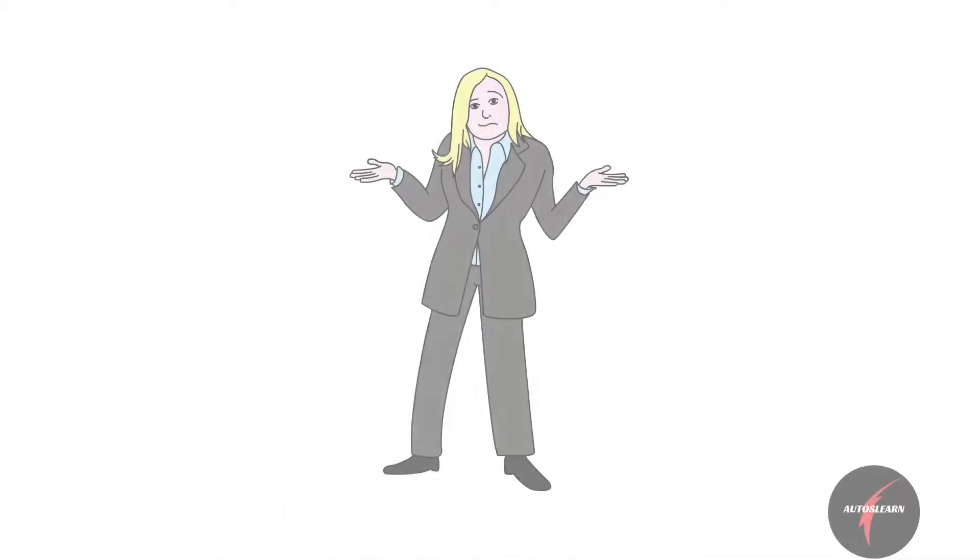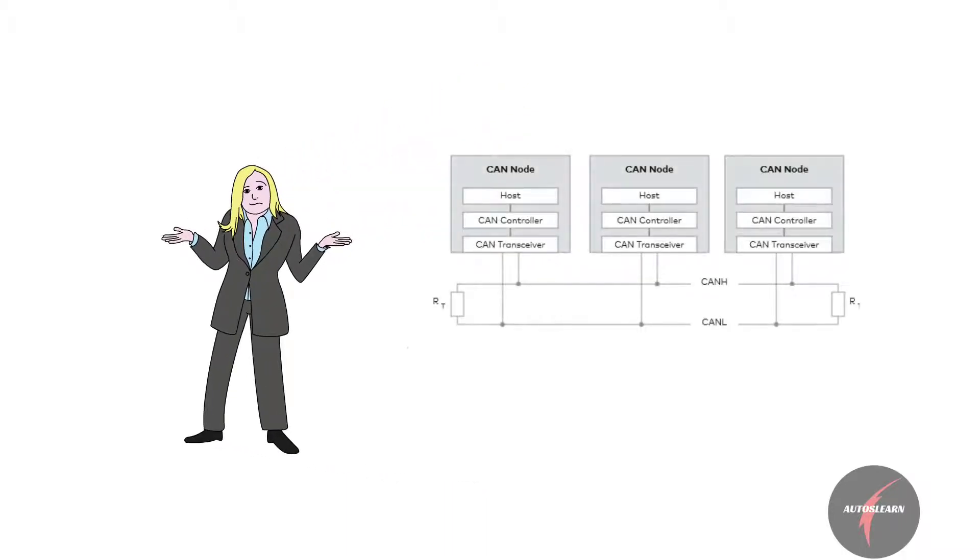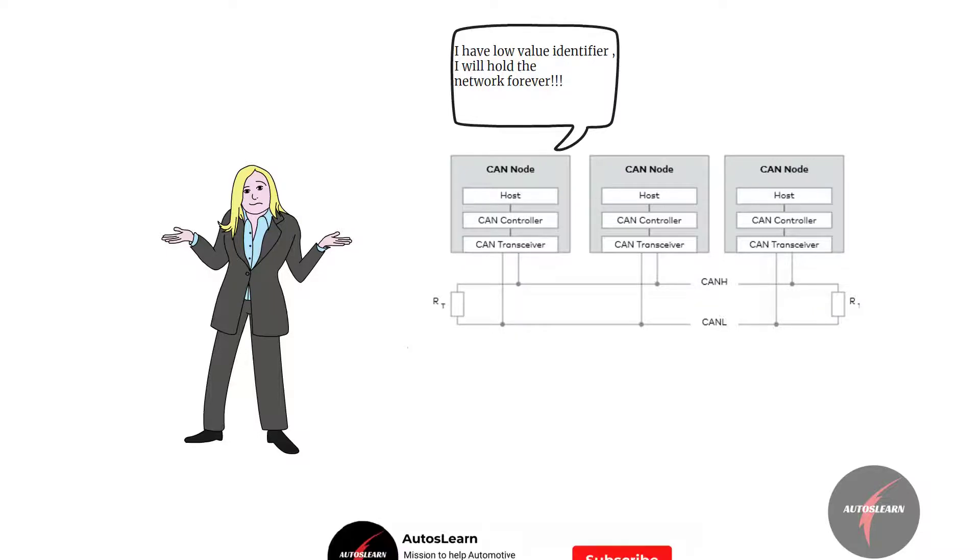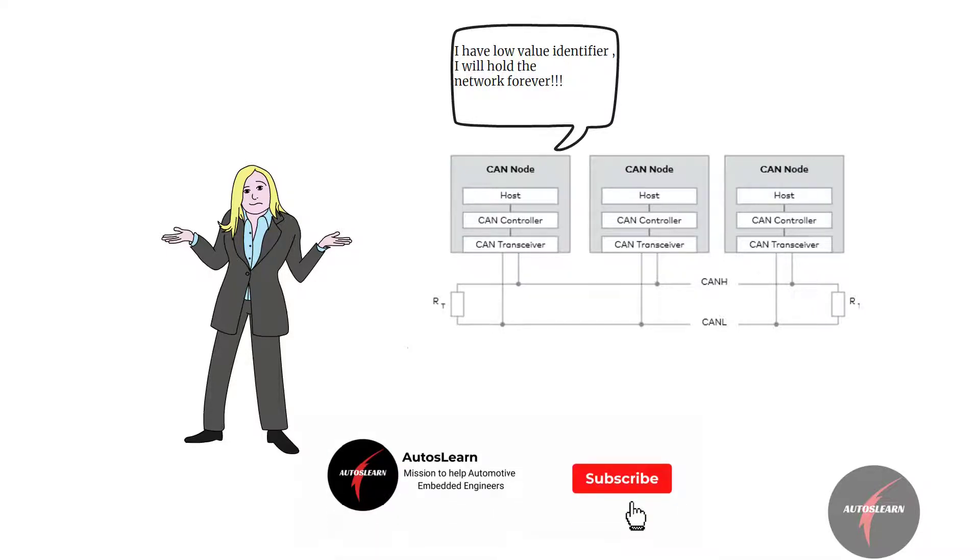What if the priority node which has the lowest identifier always sends a message? Not usually the case, but what if it keeps hold of the bus always considering the principal advantage it has over the bus because of arbitration? How do we work with this kind of issue?